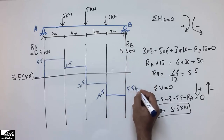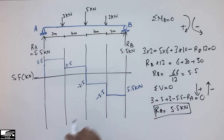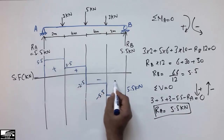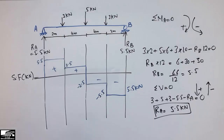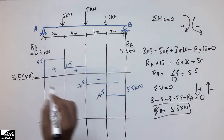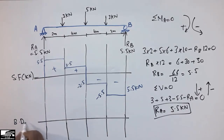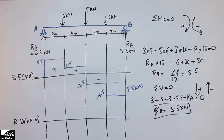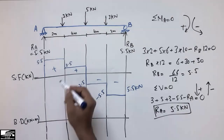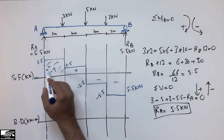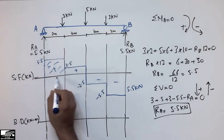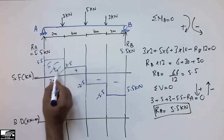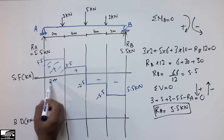The shear force diagram is positive on the left side and negative on the right side. Now for the bending moment diagram, I extend the reference lines from the shear force diagram. The bending moment is in units of kN·m. The bending moment is found from the area of the shear force rectangles. The first rectangle has height 5.5 and length 2 meters, giving an area of 5.5 into 2 equal to 11 kN·m.